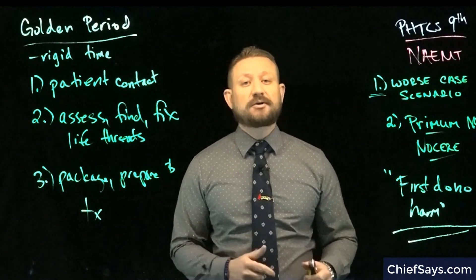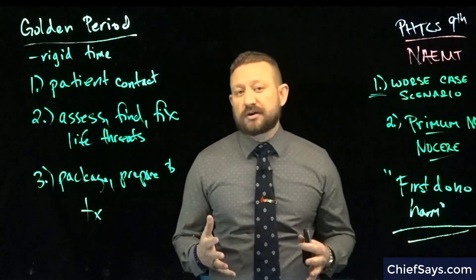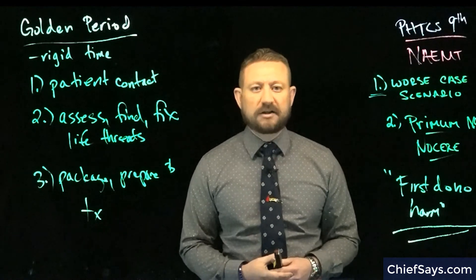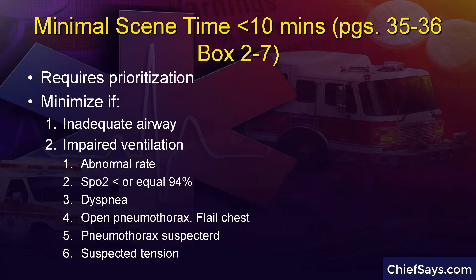It's important to have time countdowns, especially around eight minutes, nine minutes, and a warning at 10 minutes. Prioritize your care and evacuate the scene as quickly as possible. PHTLS, ninth edition, pages 35 and 36, boxes 2-7, outlines the requirements for rapid off-scene time. The first is if the patient has an inadequate airway — manage it with the least invasive measure on scene, then escalate in the ambulance when possible. Patients with an SpO2 less than or equal to 94% need to be off scene, as do patients with signs of dyspnea.